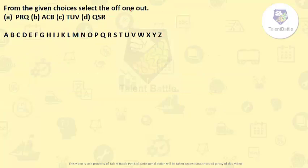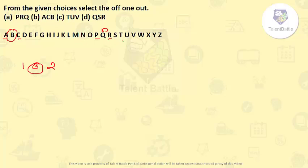From the given choices, select the odd one out. Checking the options: P, R, Q — first and third with the middle skipped. A, C, B — first and third with the middle one. T, U, V — these are taken consecutively. Q, S, R — again first and third with the middle. So the odd one out is option C, that is T, U, V, as they follow consecutive order unlike the others.